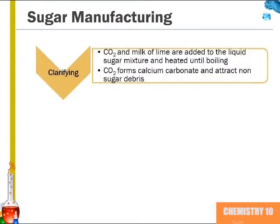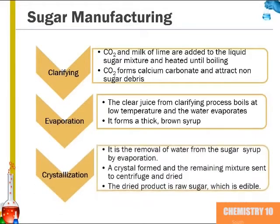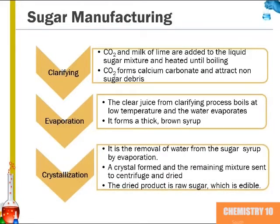The juice is then added to a mixture of carbon dioxide and milk of lime to clarify it, and in this process it is heated until it boils. The carbon dioxide forms calcium carbonate and attracts non-sugar debris. From there, the clear juice boils at a low temperature and the water evaporates, forming a thick brown syrup. Once thick enough, crystals begin to form and the remaining mixture is sent to a centrifuge and dried.